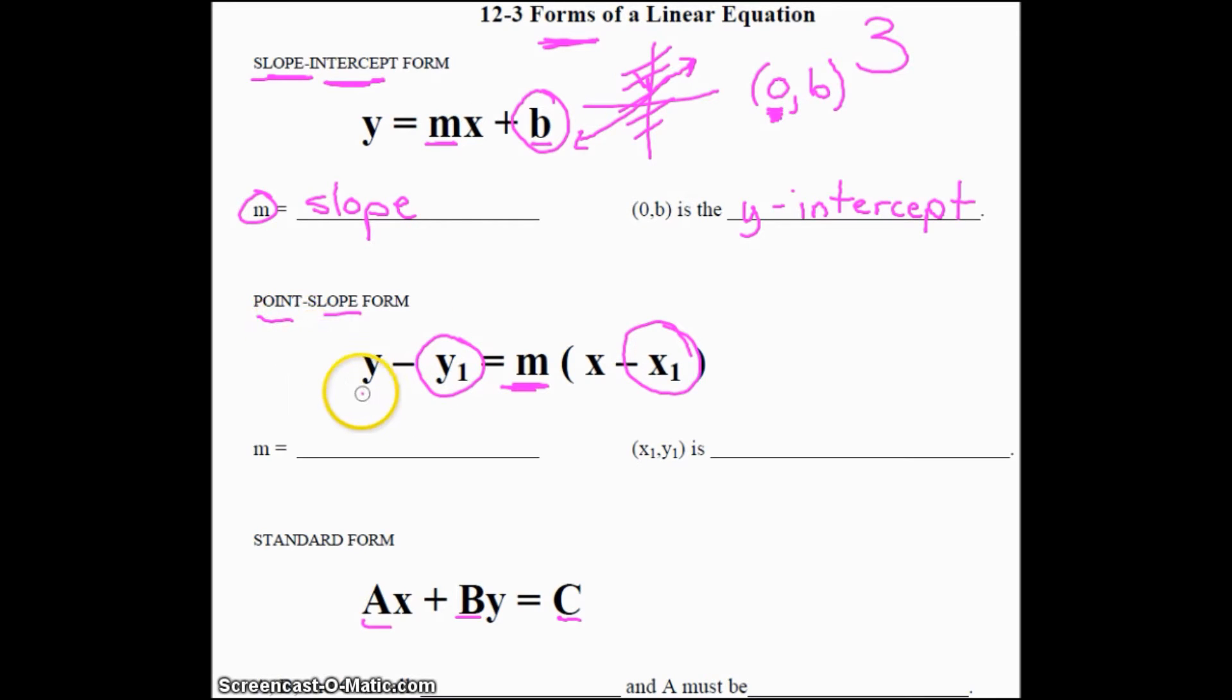Moving on to point slope form. If we have y - y₁ equals m times x - x₁. Now it may seem pretty confusing, but again it's going to be very straightforward, very easy to remember. This m-value again is always going to be our slope. I'm starting to see a pattern. This second part, we have an x₁ and a y₁. Our x₁ and y₁ are actually going to be the ordered pair of x₁ and y₁. This is a point that falls on this line. So x₁ and y₁ is the point that crosses on the line.